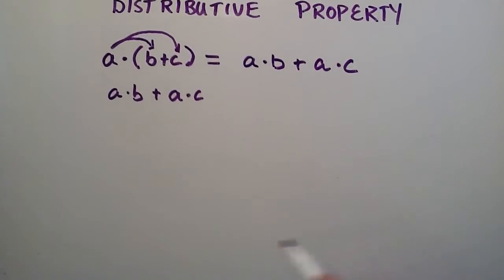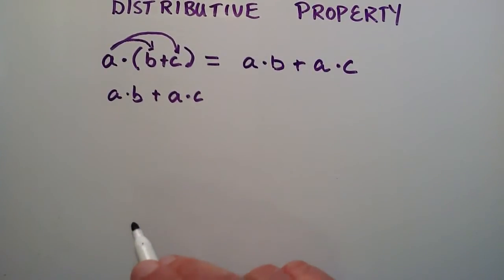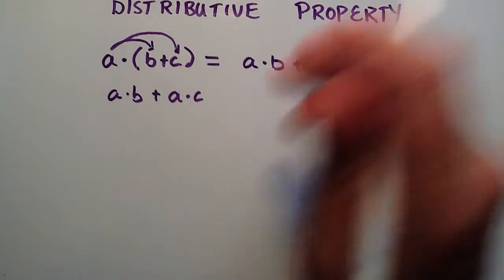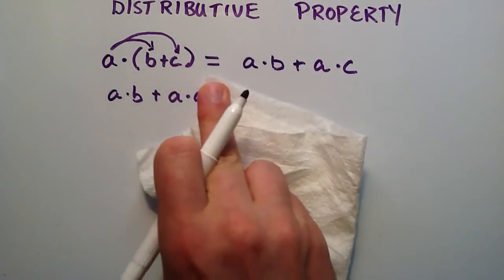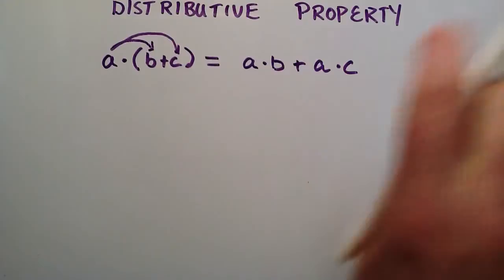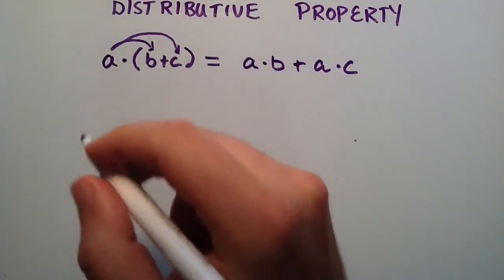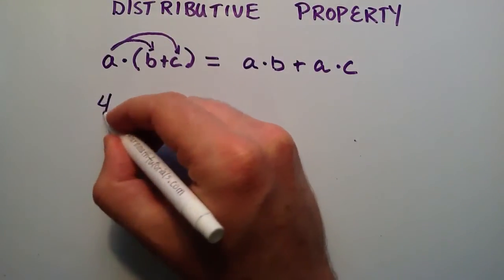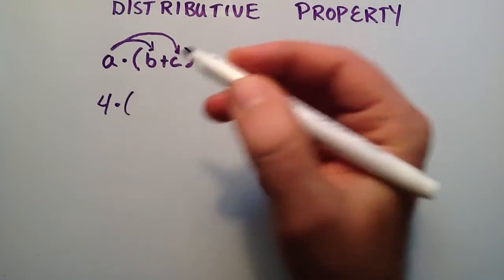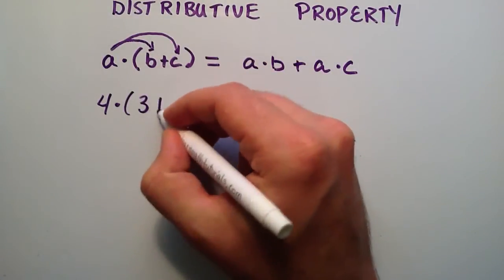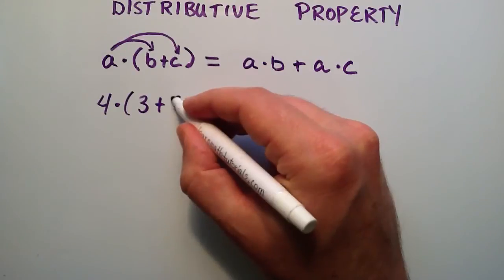So let's choose some numbers for a, b, and c so that we can use this example here. So I'm just going to go ahead and erase this part, since it's written right here already. So we're going to say that we'll just choose a as 4, we'll choose b to be 3, and c we'll choose to be 5.